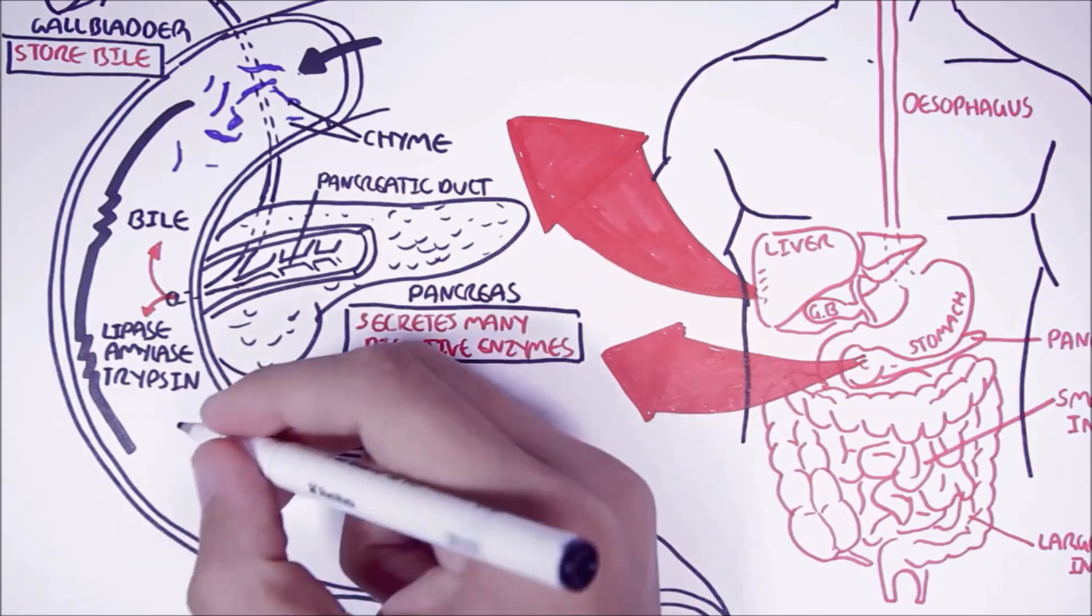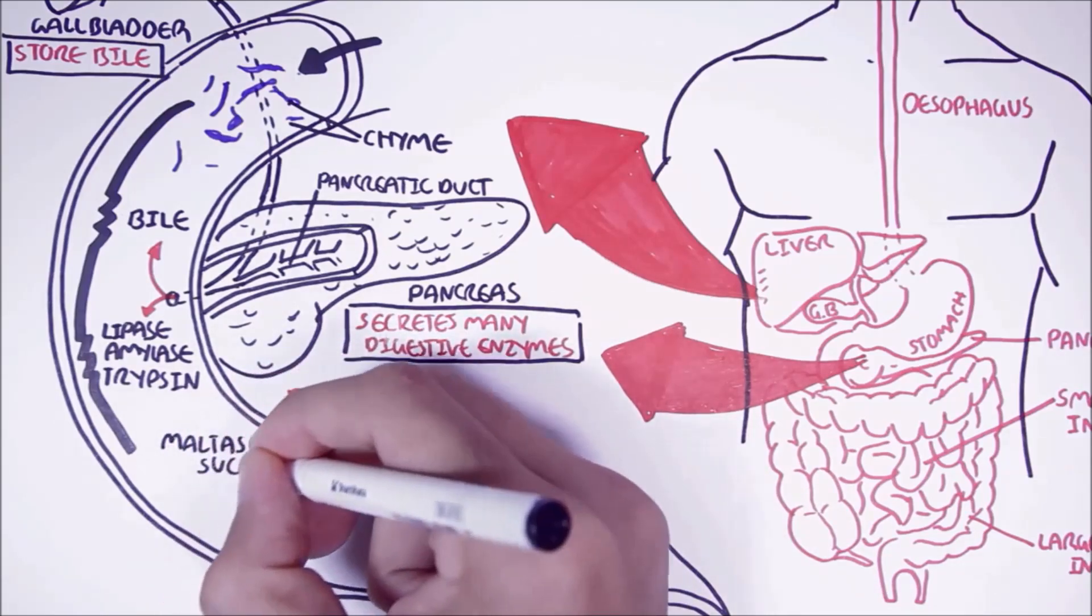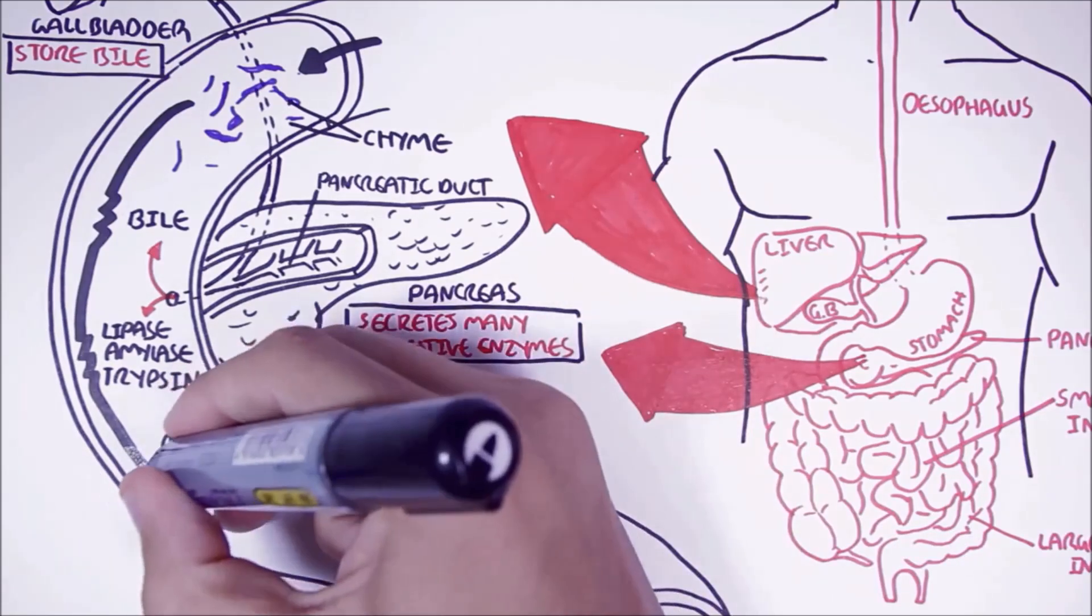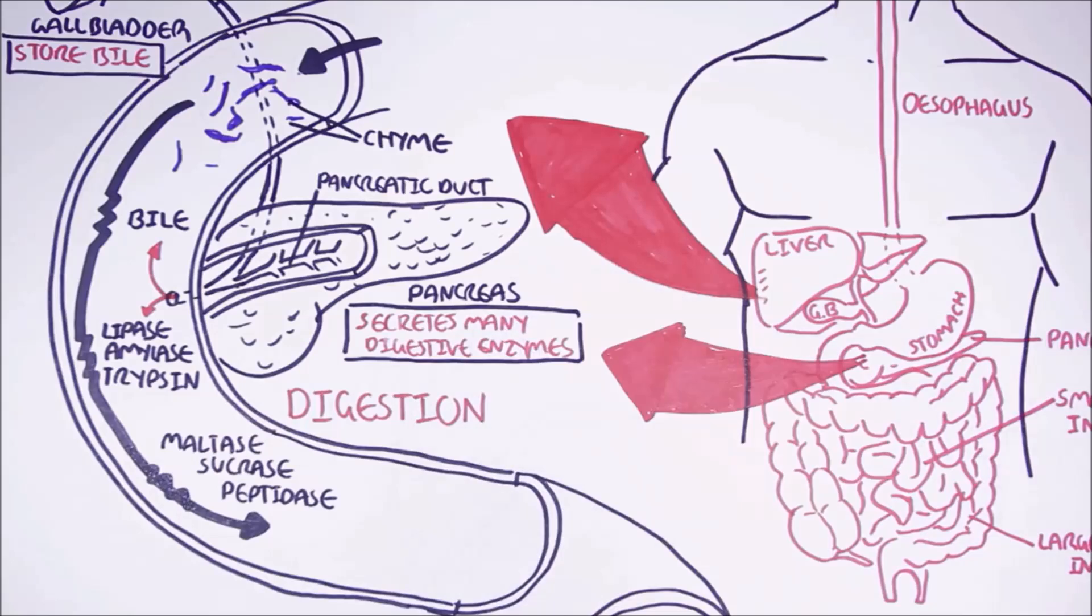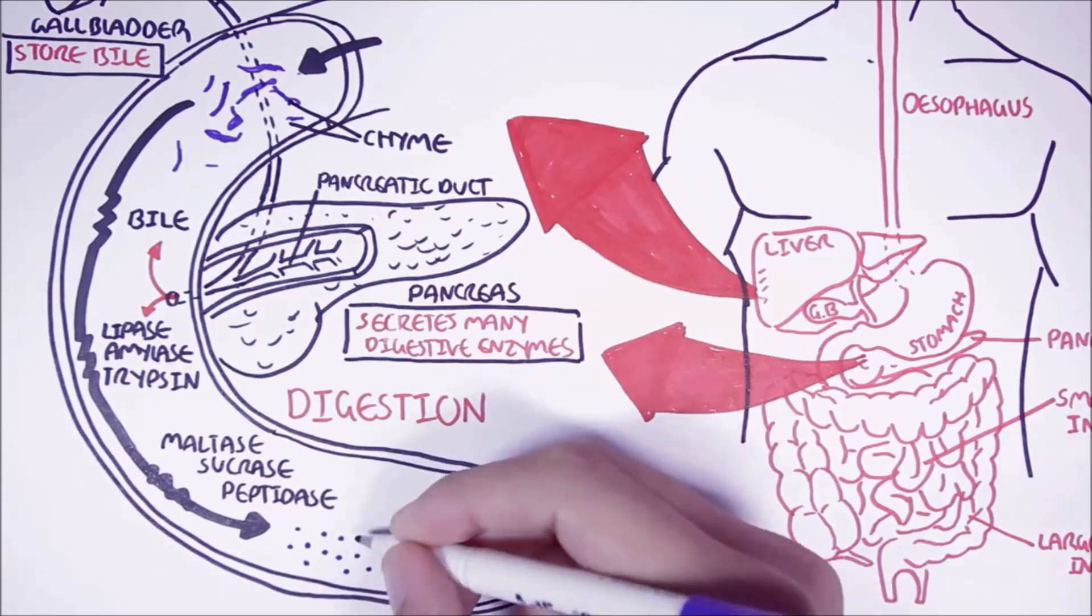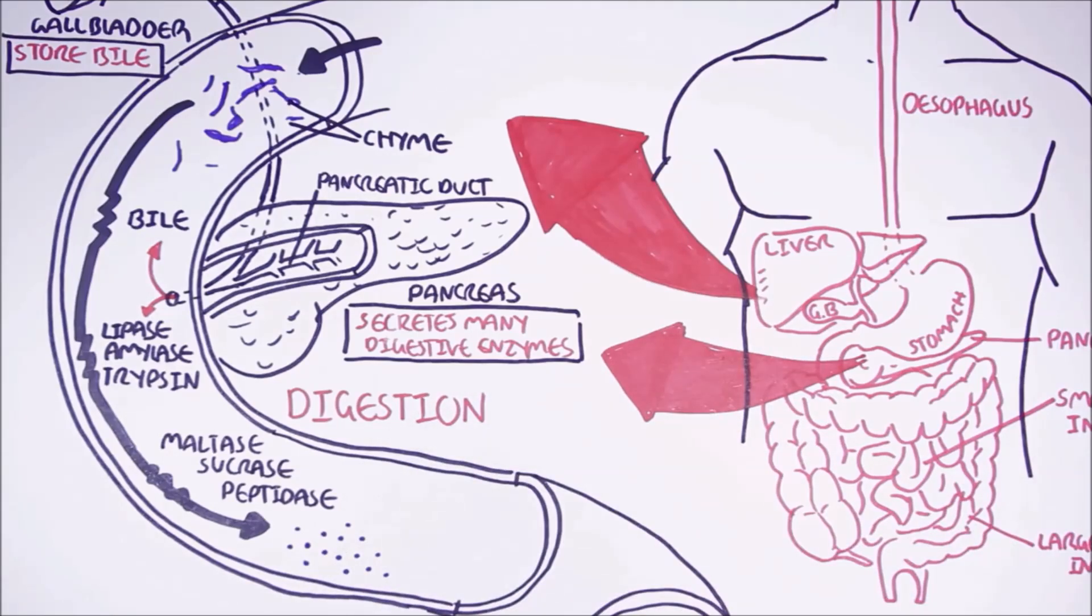These brush border enzymes include maltase, lactase, sucrase, and peptidase. The brush border enzymes are the final step of food digestion. The chyme will encounter all these enzymes and chemicals which will further digest it into smaller molecules.